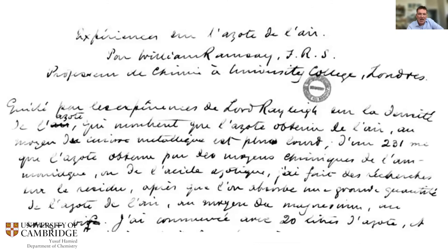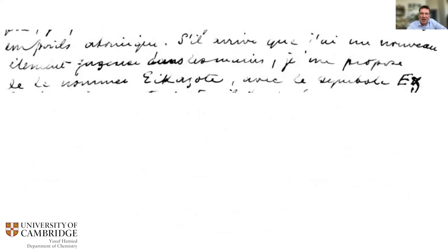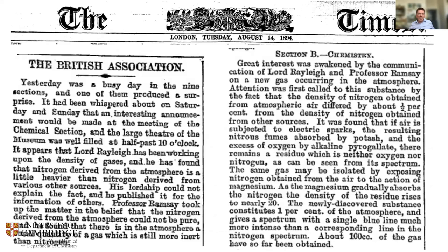Only recently was it discovered that Ramsay had deposited a sealed packet with the French Academy of Sciences — opened only in 2004. In it he described reducing 20 liters of nitrogen to 200 milliliters of the new gas, and proposed naming it 'icare' or 'eka-azote,' perhaps similar to Mendeleev's naming convention. He was recognizing Rayleigh's work and simply trying to stake a claim to his isolation of the gas.